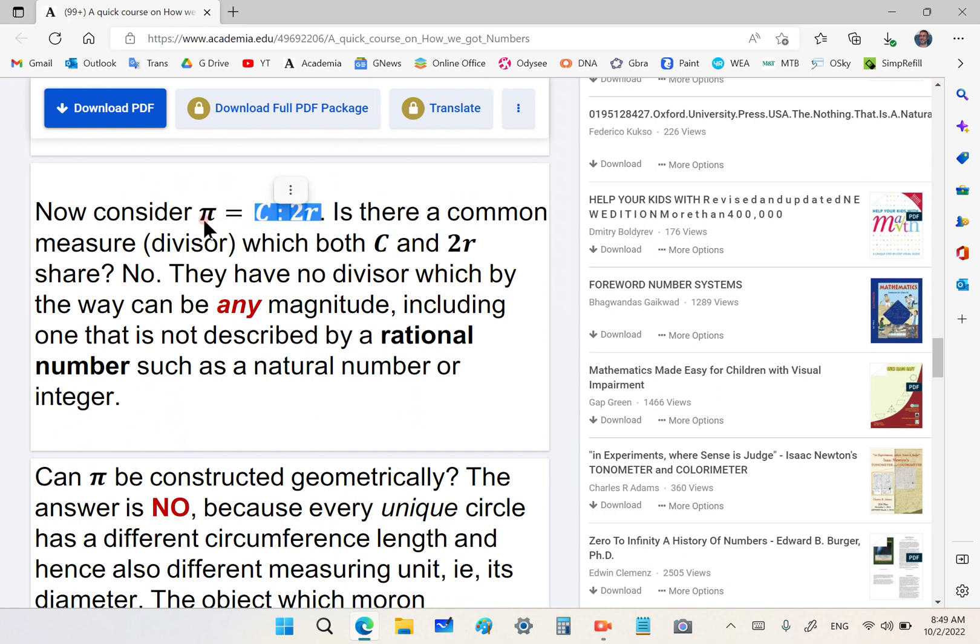Consider that pi is not actually equal to this ratio. It's realized from this ratio. Even what I've written here is not actually correct. Pi is really the attempted measure of this ratio. It's a failed measure. Not even the gods who have lived forever, and who shall continue to live forever, can measure this ratio. Think about that for a moment. Is there a common measure which both C and 2R share? No, there is no common measure. They have no divisor which, by the way, can be any magnitude, including one that is not described by rational number.